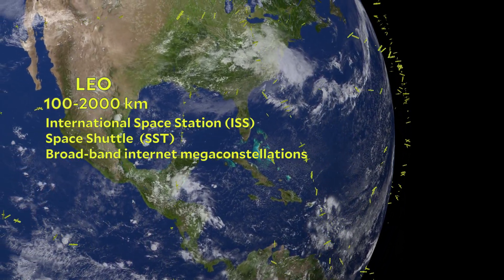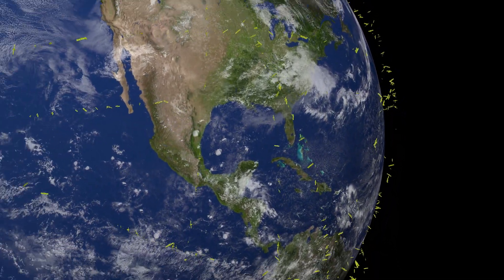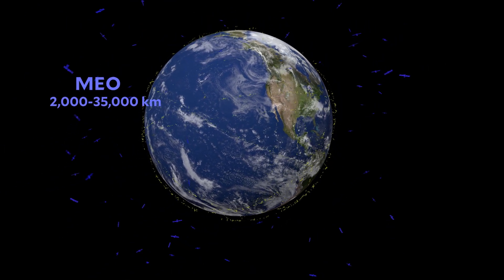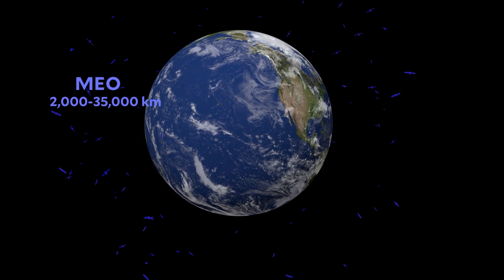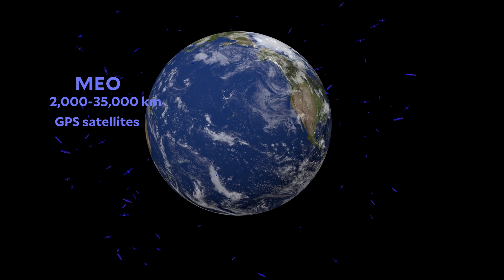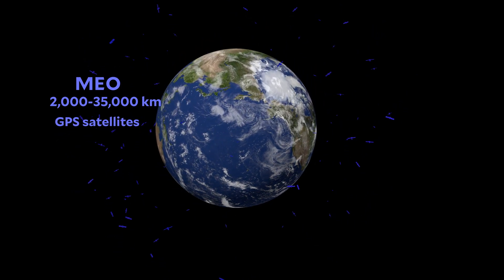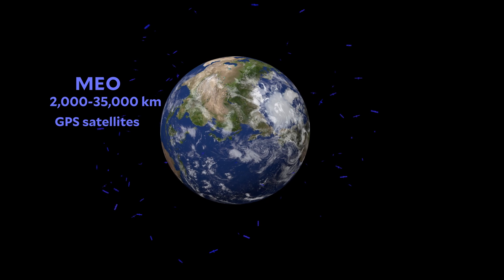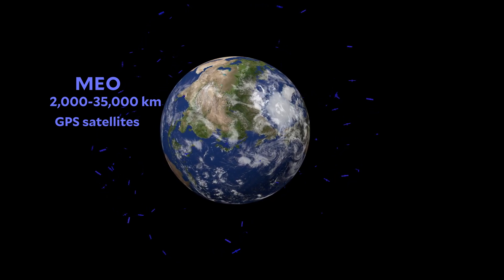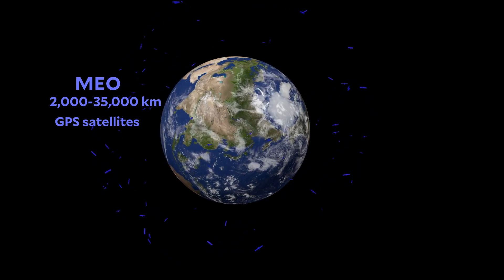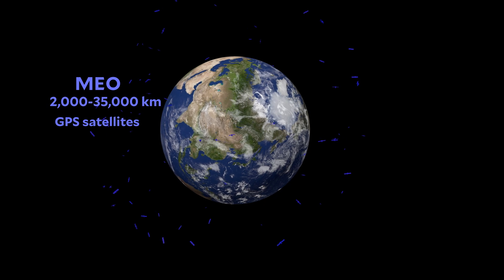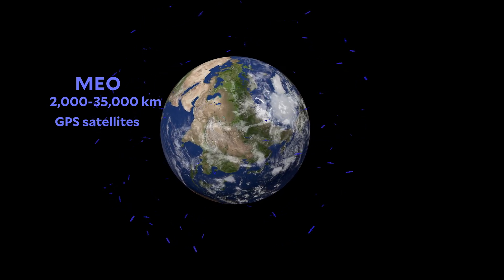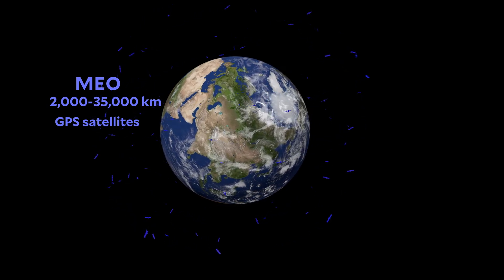The next region is medium Earth orbit — MEO. These are things between about 2,000 and 30,000 kilometers. This is where GPS, the Global Positioning System, satellites orbit. When you're on your phone trying to figure out how to get from here to there, you're using satellites in MEO, in medium Earth orbit. This region is a pretty nasty place to be a satellite, and we'll explore more why when we focus on this region.